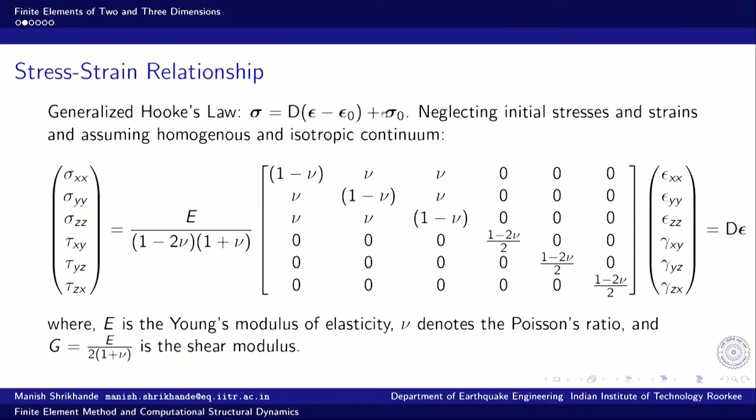Epsilon_0 is the initial strain — for example, thermal expansion strains arising from temperature differences. These strains do not originate from forces or loads imposed on the body, so the initial strain must be removed when considering stresses due to loads. Sigma_0 is the initial stress — the body may already be pre-stressed, and those stresses must be added to the stresses resulting from deformations.